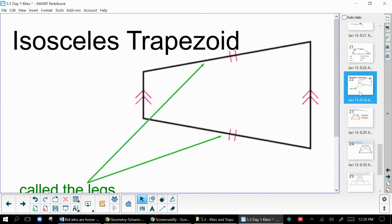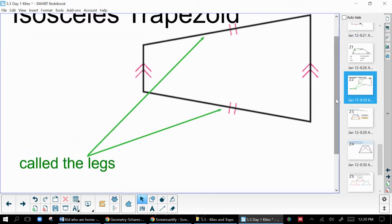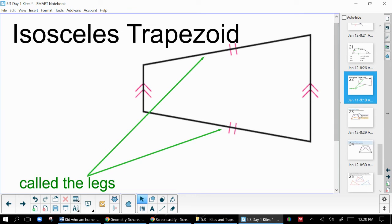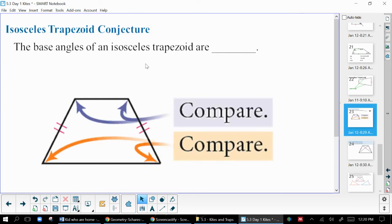Now, most of the conjectures we know about trapezoids are actually going to be true only for special kinds of trapezoids called isosceles trapezoids. Just like in an isosceles triangle, an isosceles trapezoid has two congruent sides and they do have to be the sides that are not parallel. And just like in isosceles triangles, we call those the legs.